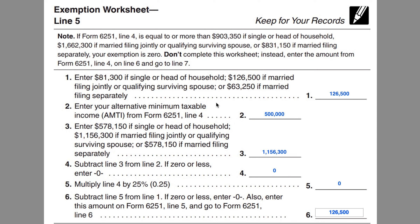In line 4, you'll subtract line 3 from line 2. If zero or less, enter 0, as we did. Let's take a quick look to see what would happen if we added an extra million dollars of AMTI here, because at this point we subtracted a rather large number from a smaller number and reached 0. The rest of the worksheet is fairly predictable.